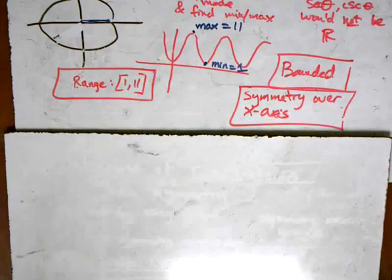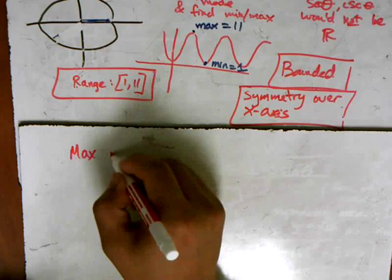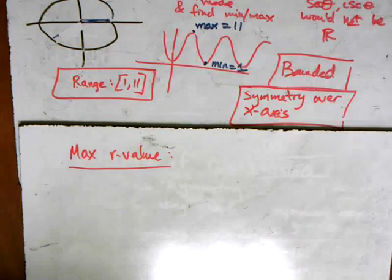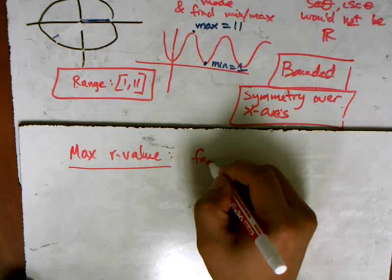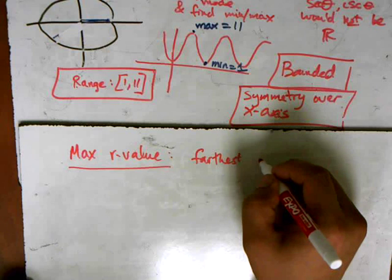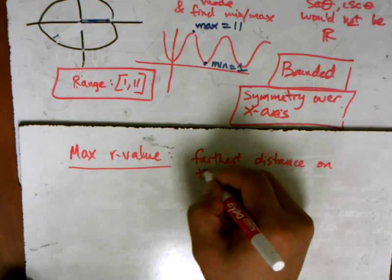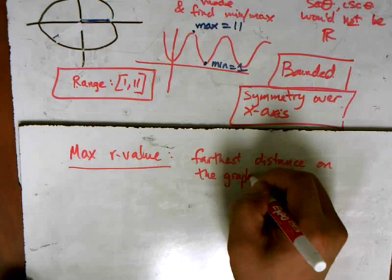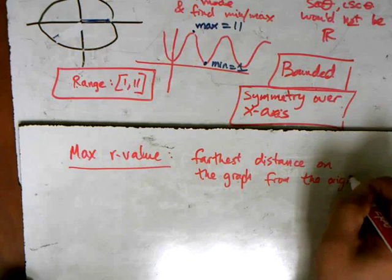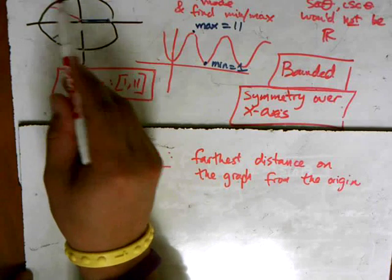And so we're looking for the maximum r-value. And the definition here is the farthest distance on the graph from the origin. So in other words, in this graph here, how far can I possibly get,